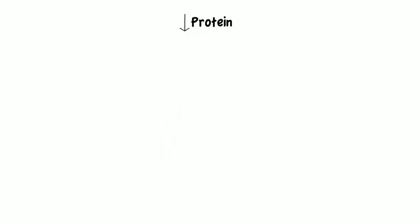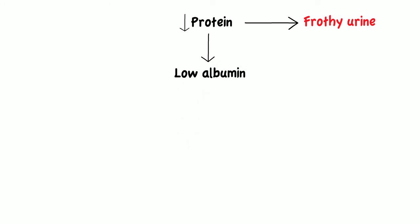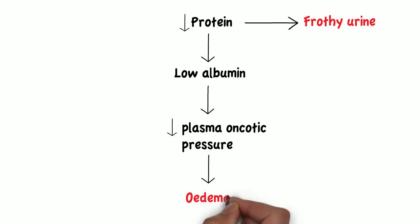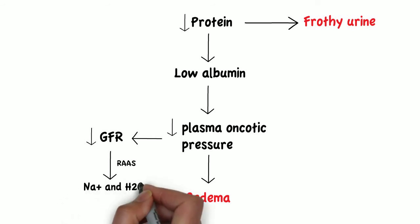If you're losing protein in the urine, you will present with frothy urine, and these patients will have low albumin as it's being lost in urine, resulting in a low plasma oncotic pressure — so fluid will leak out into the interstitium causing edema. Another mechanism leading to edema is that the loss of plasma oncotic pressure leads to a reduction in extracellular volume and consequently glomerular filtration rate, which in turn activates the renin-angiotensin-aldosterone system, increasing sodium and water retention.